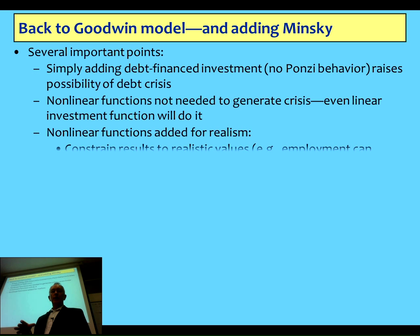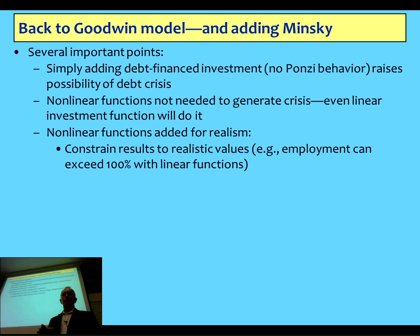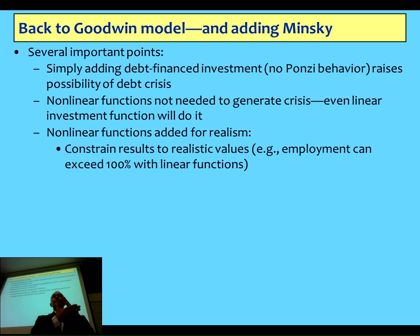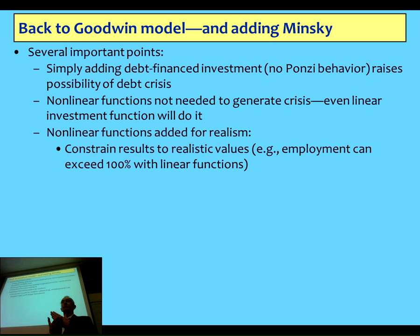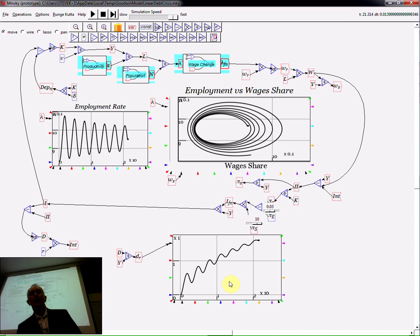Notice that I got cycles without any nonlinear behavioural assumptions. I had linear behaviour by workers related to the employment rate, and linear behaviour by capitalists related to the profit rate. The nonlinearity you see in that behaviour comes out of the structure of the model — not from an assumption of nonlinear behaviour.